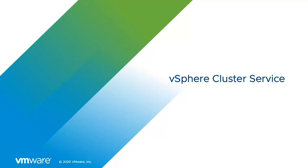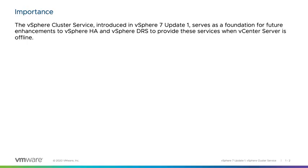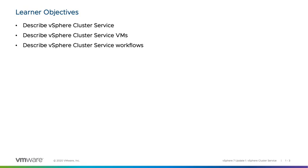In this video, we're going to discuss the vSphere Cluster Service. The vSphere Cluster Service was first introduced in vSphere 7 Update 1 and serves as a foundation for future enhancements to vSphere HA and vSphere DRS to provide these services when vCenter Server is offline. At the end of this lesson, we'll describe vSphere Cluster Service, describe the vSphere Cluster Service VMs, and describe vSphere Cluster Service workflows.